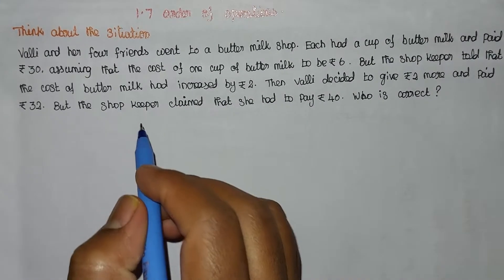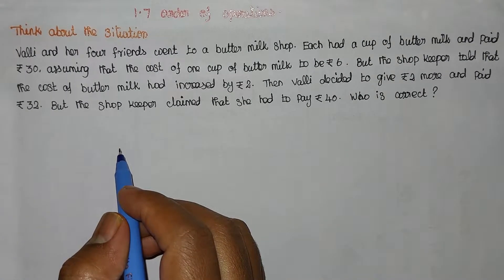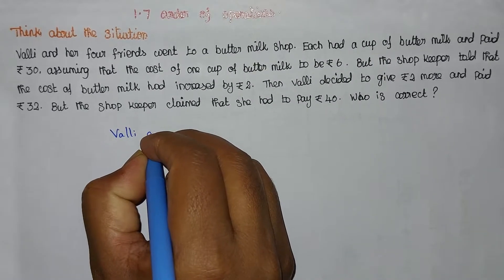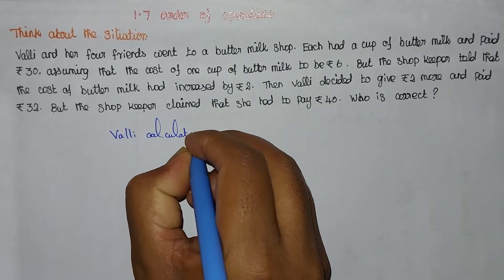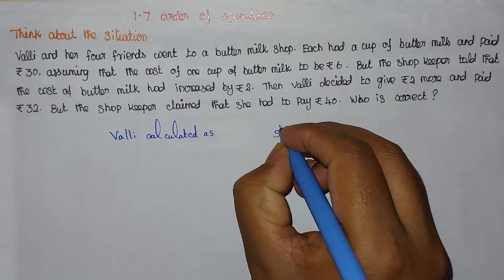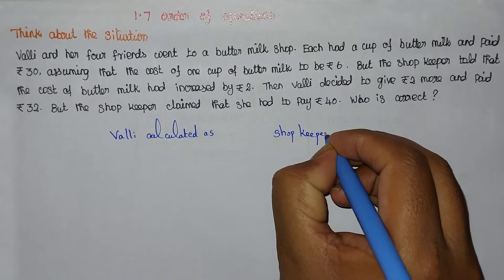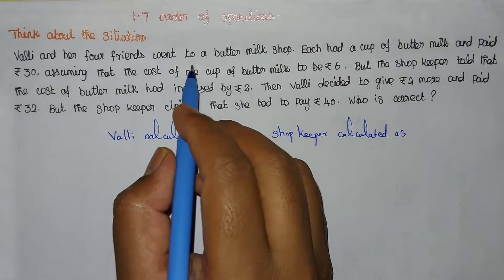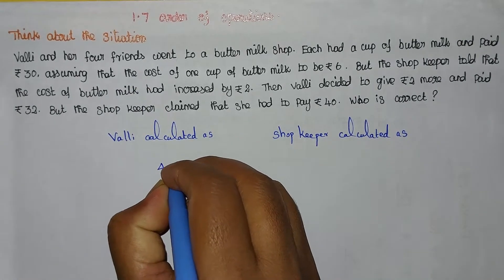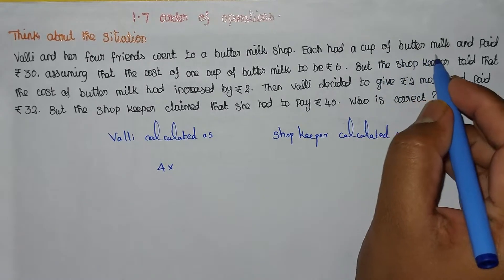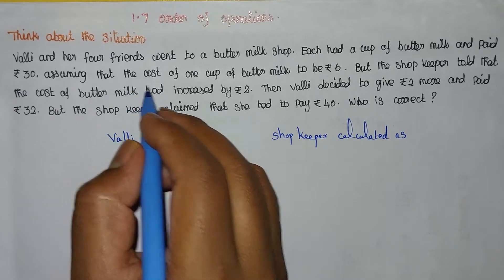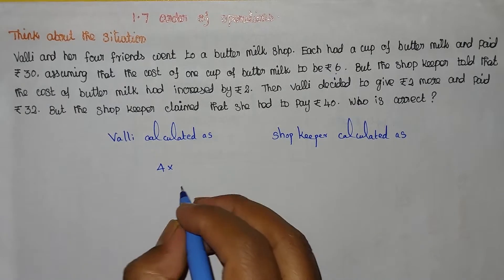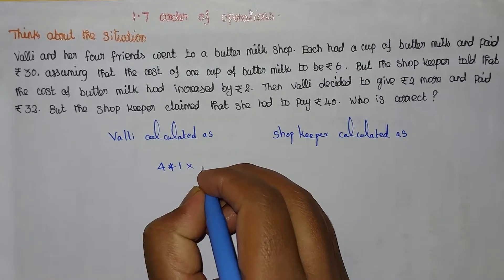Now, Wally calculated as follows. Totally 4 friends, and including Wally that is 4 plus 1, so totally 5 members. 4 plus 1 into 6. Each had one cup of buttermilk at 6 rupees, so total is 30 rupees.